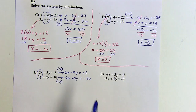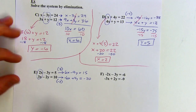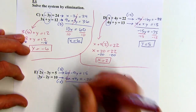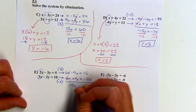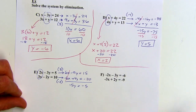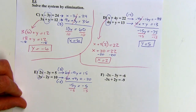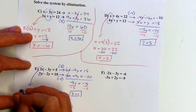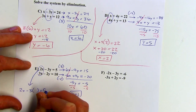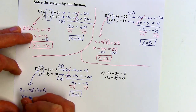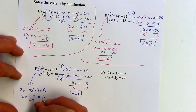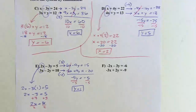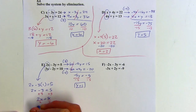Now I'm ready to add. The 6x and negative 6x eliminate. Negative 9y plus 4y is negative 5y, and 15 minus 20 is negative 5. Dividing both sides by negative 5, y equals 1. Going back to the top original equation: 2x minus 3 times y — y was 1 — equals 5, so 2x minus 3 equals 5. Adding 3 to both sides, then dividing by 2, x equals 4.